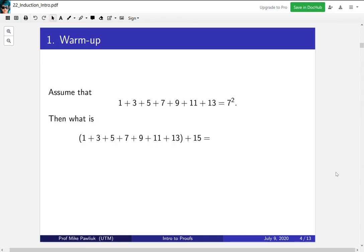Here's a warm-up question for you. Assume that 1 + 3 + 5 + 7 + 9 + 11 + 13 = 7². And what I mean by assume that I mean don't actually compute it yourself just take it for granted for now. Then what is (1 + 3 + 5 + 7 + 9 + 11 + 13) + 15? What is this equal to? I want you to solve this question without actually re-computing all of them. Take a moment to do this.